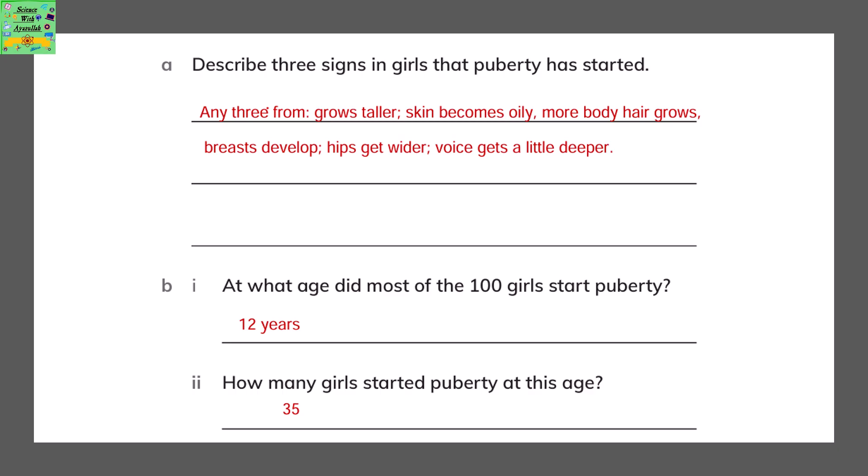At what age did most of the 100 girls start puberty? At the age of 12 — that's the most common age. How many girls started puberty at this age? 35 girls.